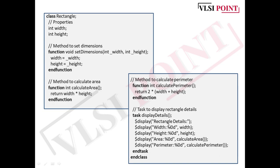We also have a task to display the rectangle details - width, height, area, and perimeter. In this way, you can define a class with properties and methods. I hope now it's more clear what the role of properties and methods are. According to your code requirements, you can define that.